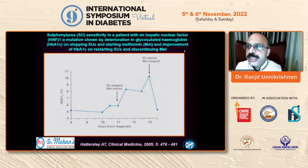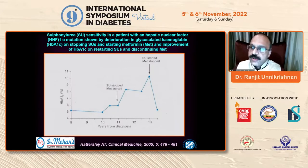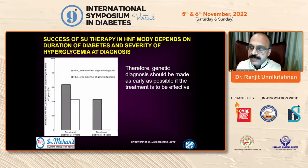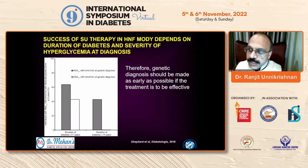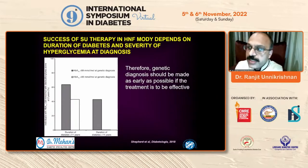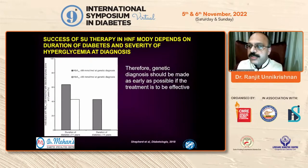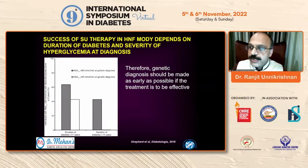Does it matter when you make the switch? The answer is yes — the earlier you switch a patient with monogenic diabetes from insulin to sulfonylurea, and the lower the HbA1c at the time of switch, the better the outcome. When you delay the switch, because of ineffectual treatment, the beta cell starts getting exhausted such that even a later switch may fail to elicit a response. So if you have a suspicion of actionable monogenic diabetes, do not hesitate — do the genetic testing and switch them from insulin to sulfonylurea as soon as possible.